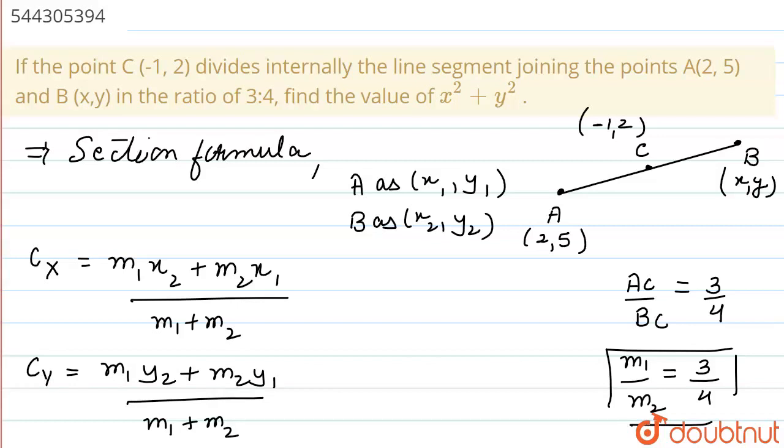We know that this can be written as M1 is 3 and x2 is x, plus M2 that is 4 and x1 is 2, and M1 plus M2 is 3 plus 4 which is 7. Similarly, the Cx which is given in the question itself, the Cx is -1 and Cy is 2. So we will put these values here. It will become -1. This is one relation which we will be solving in the next steps.